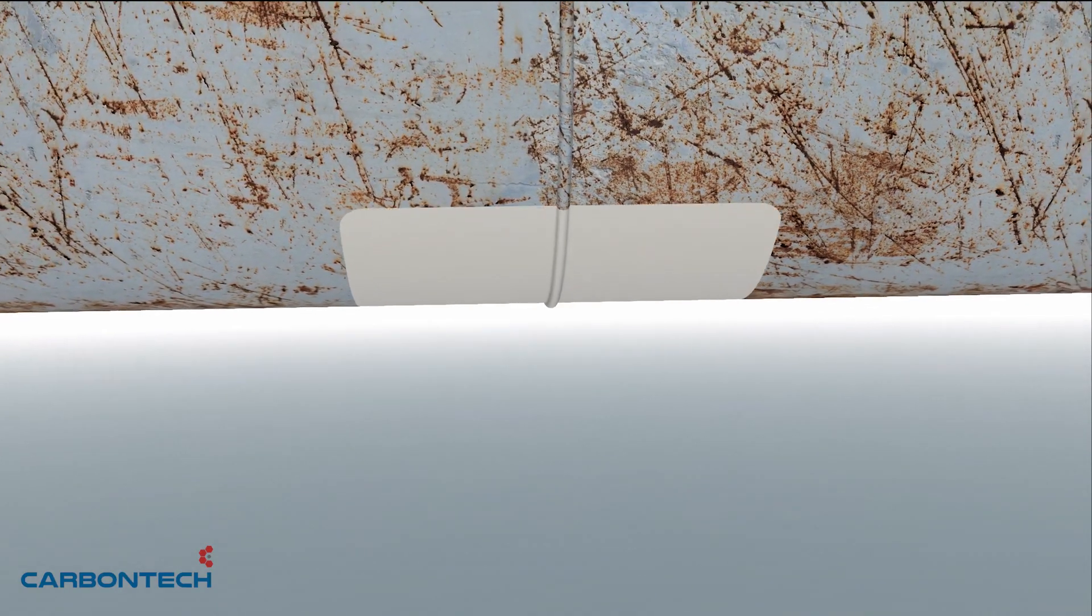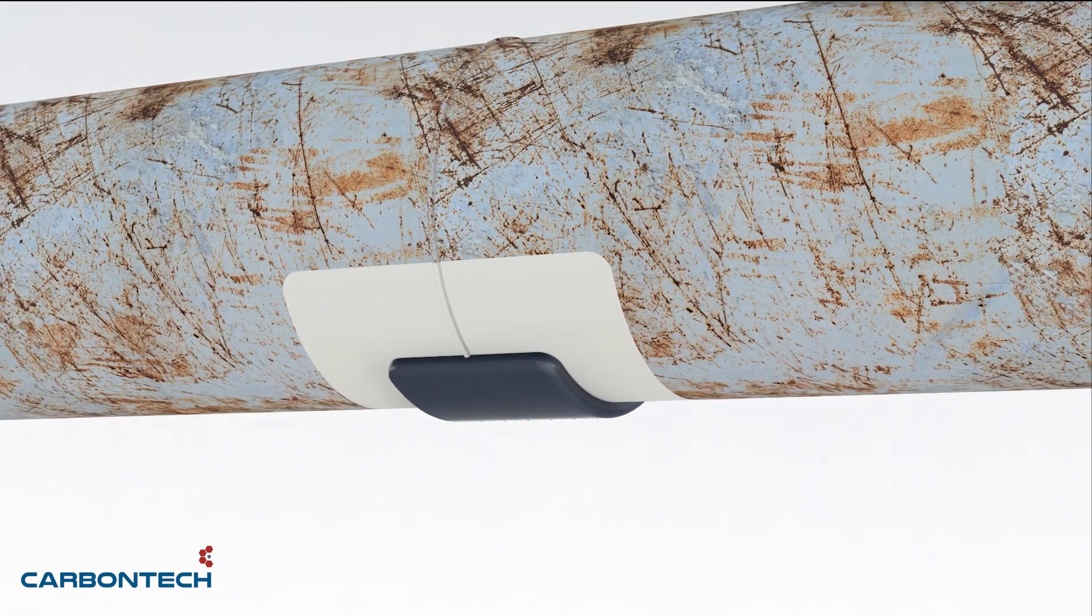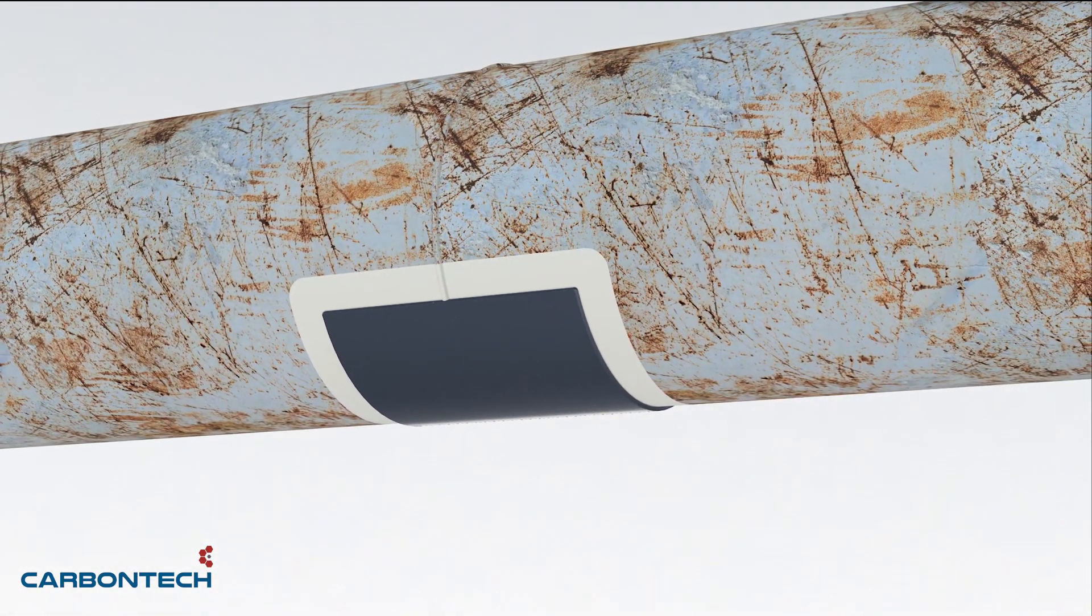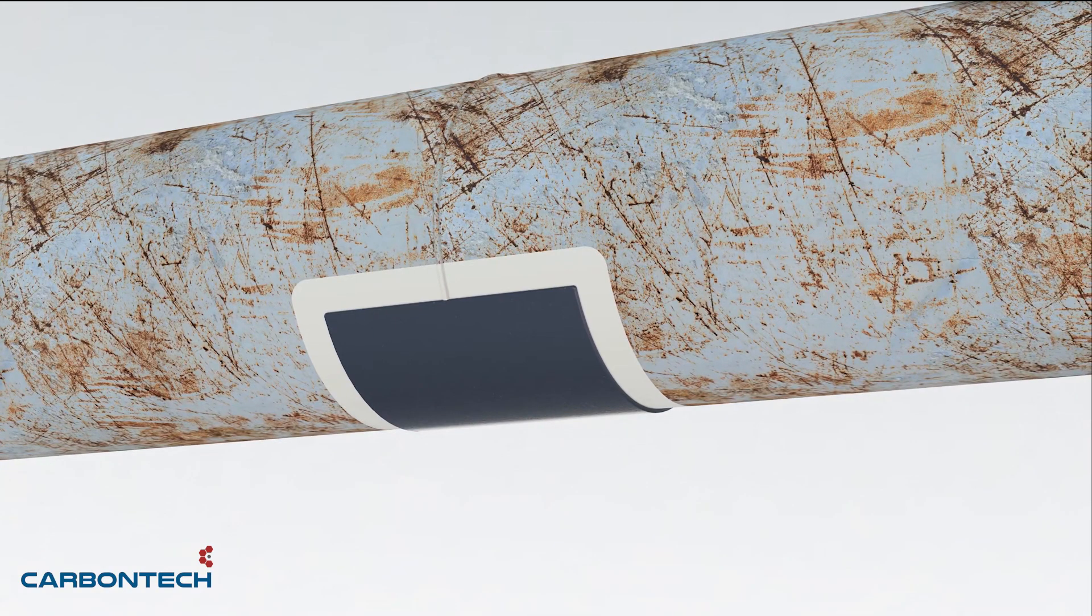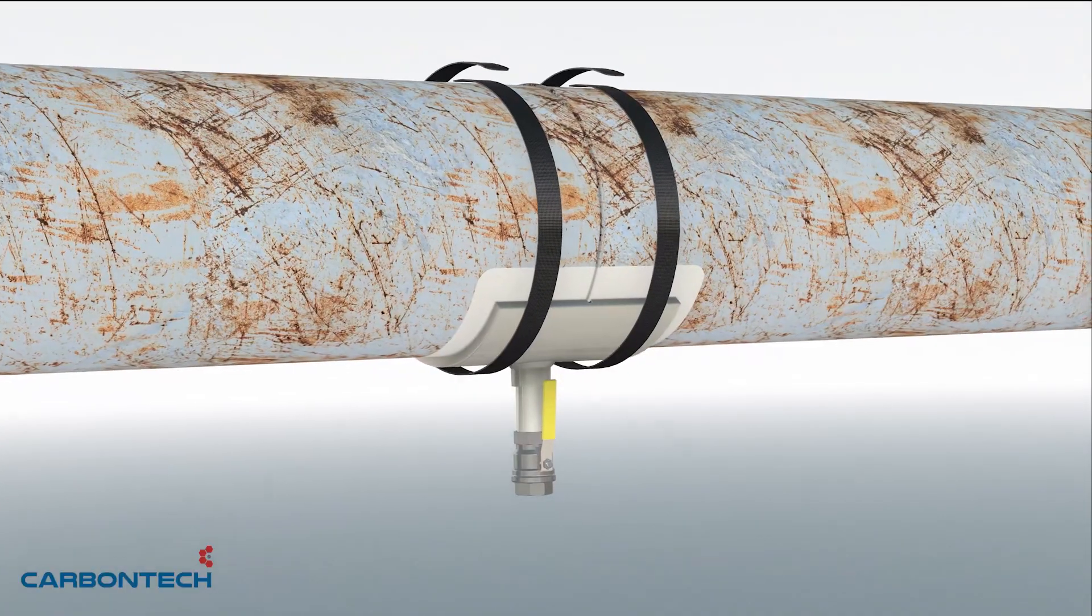The landing area of the Rescue Saddle is sanded down and made free of dirt and grime using RevoPrep. Revo Steel Adhesive is applied on the prepared area. The Rescue Saddle is placed over the leak and tied down with RevoStrap.